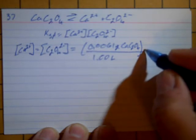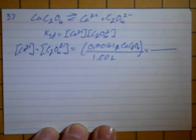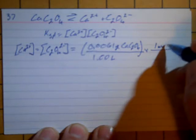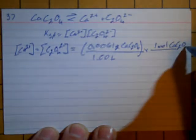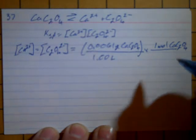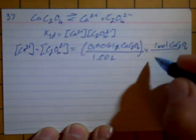And we would have to multiply that by the fact that for every 1 mole of calcium oxalate, there are 128.1 grams.